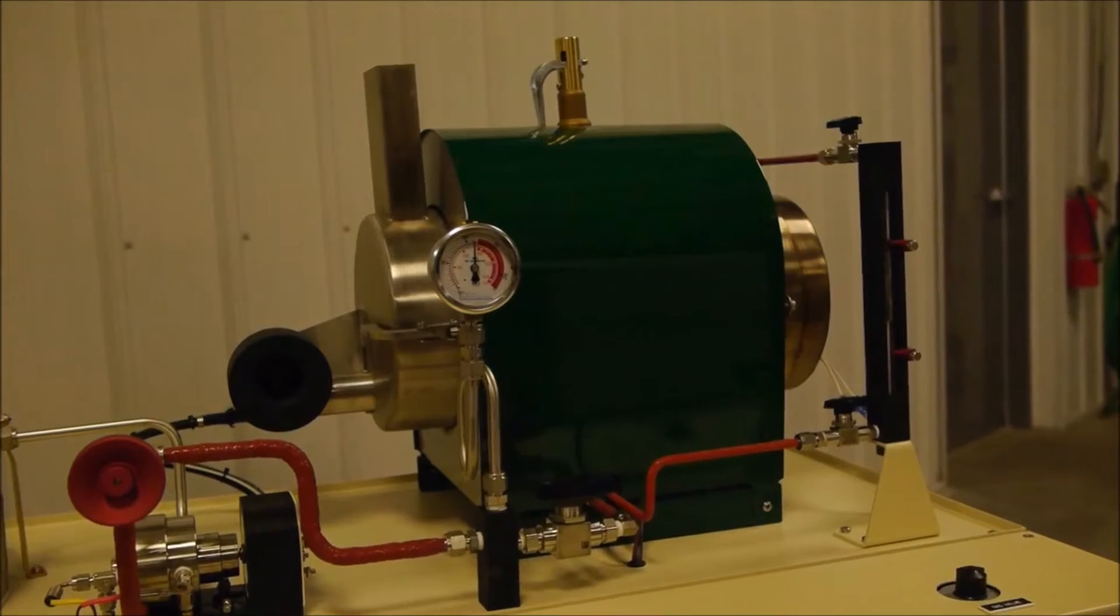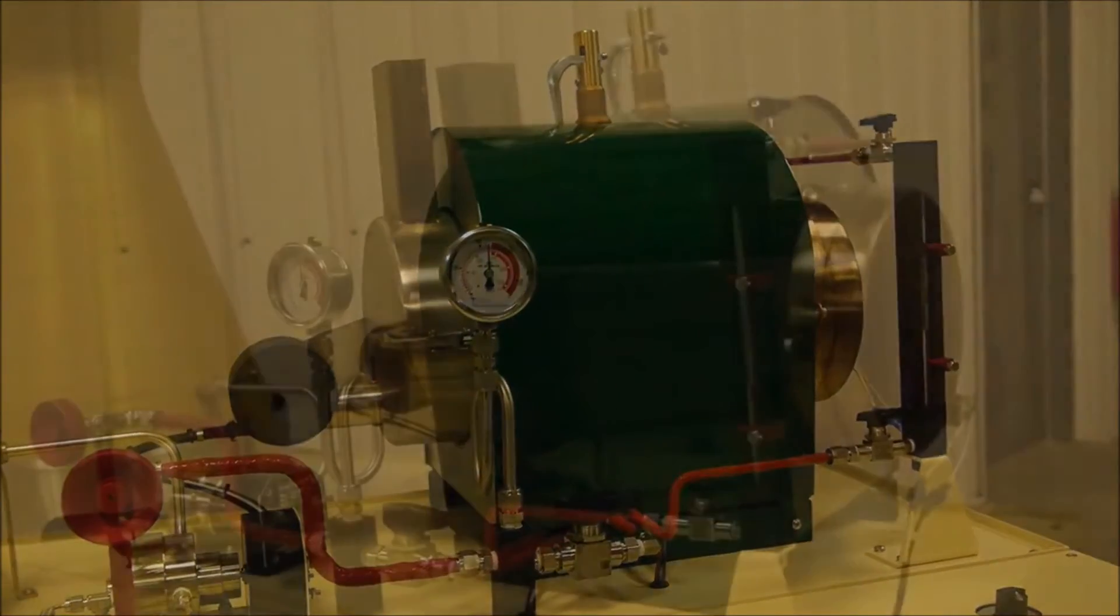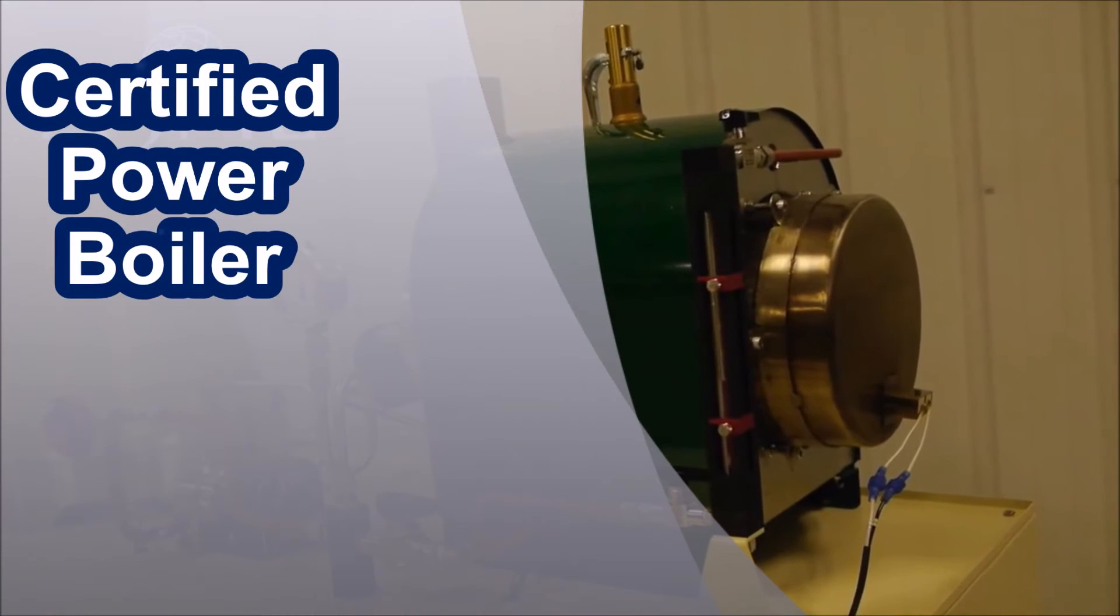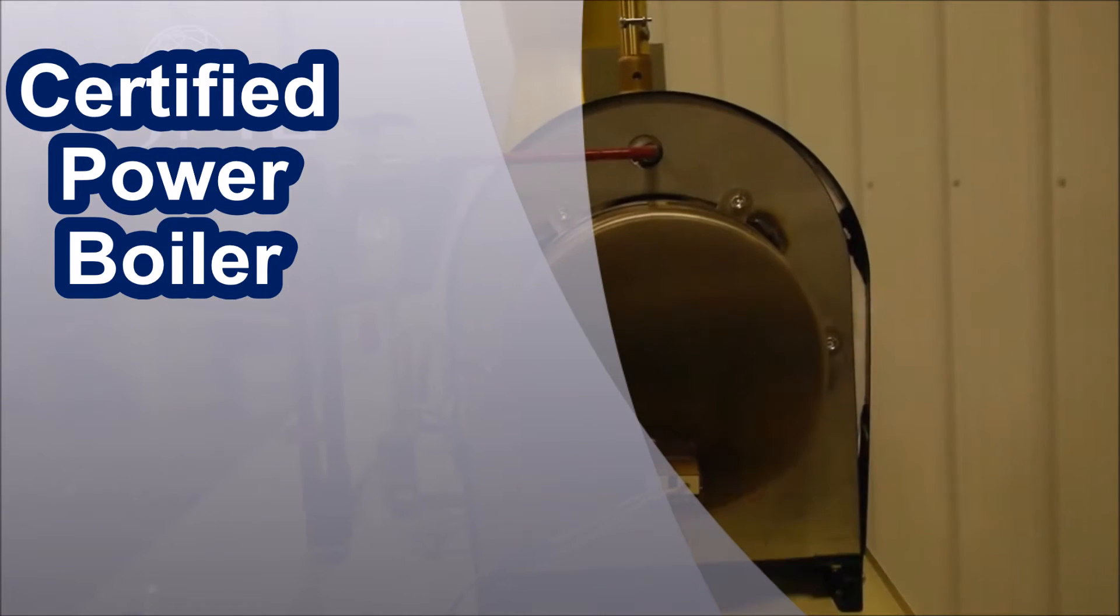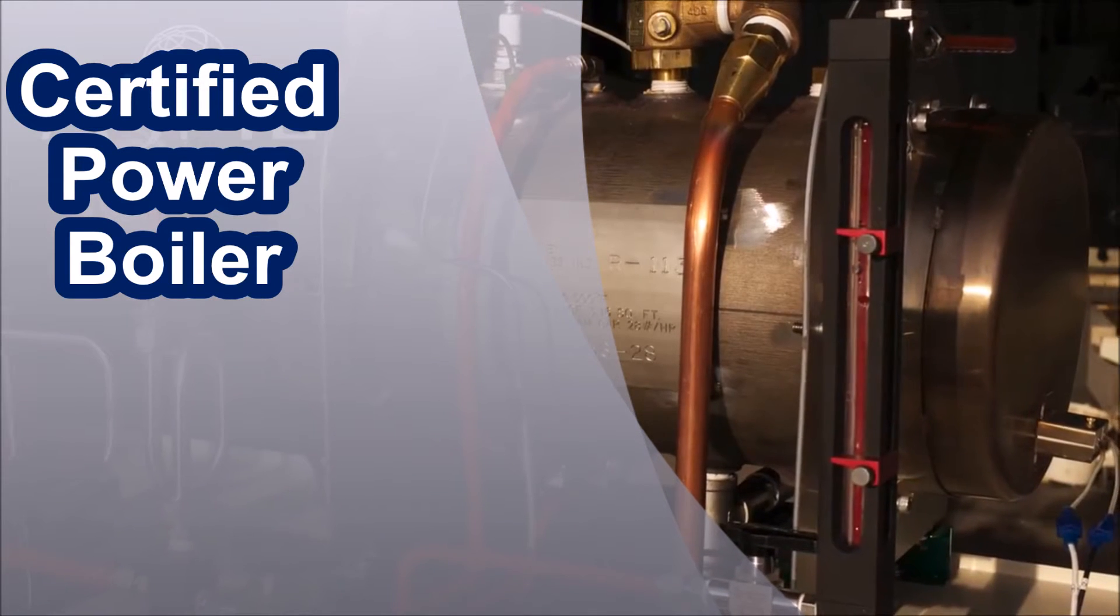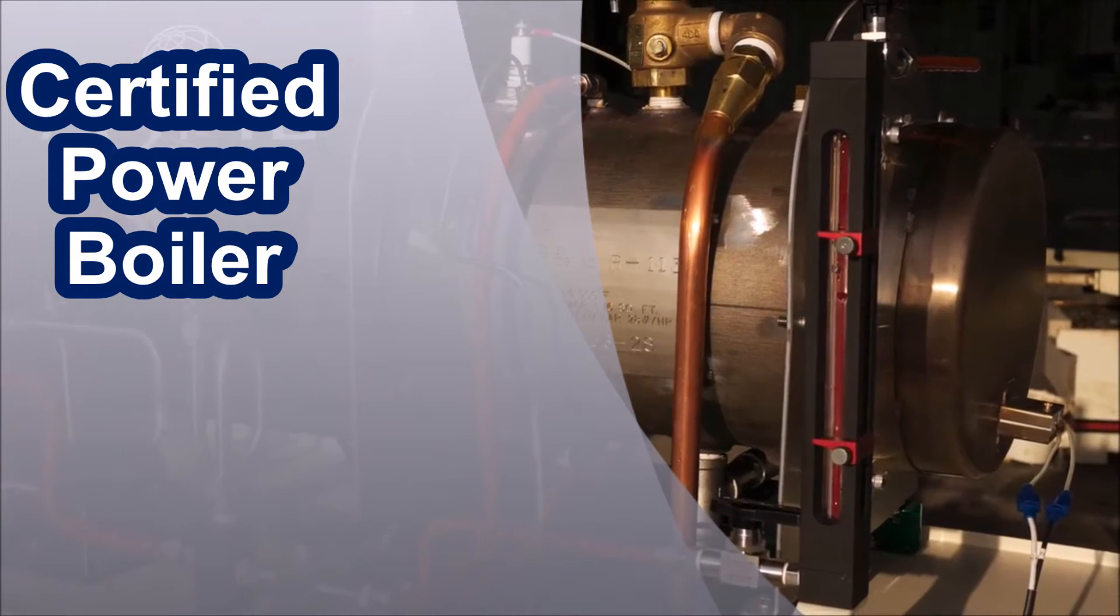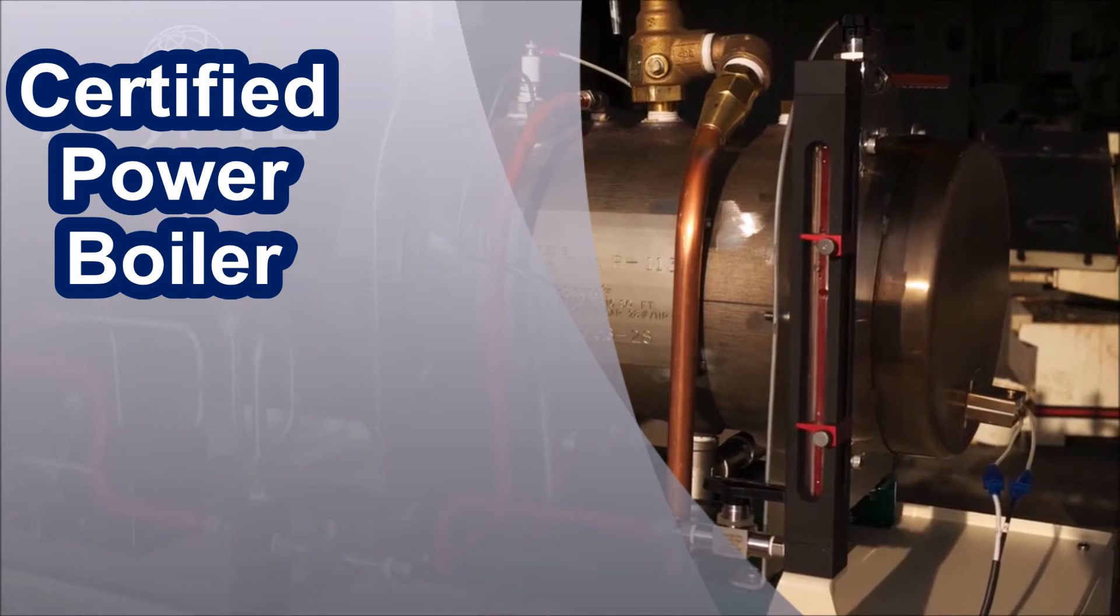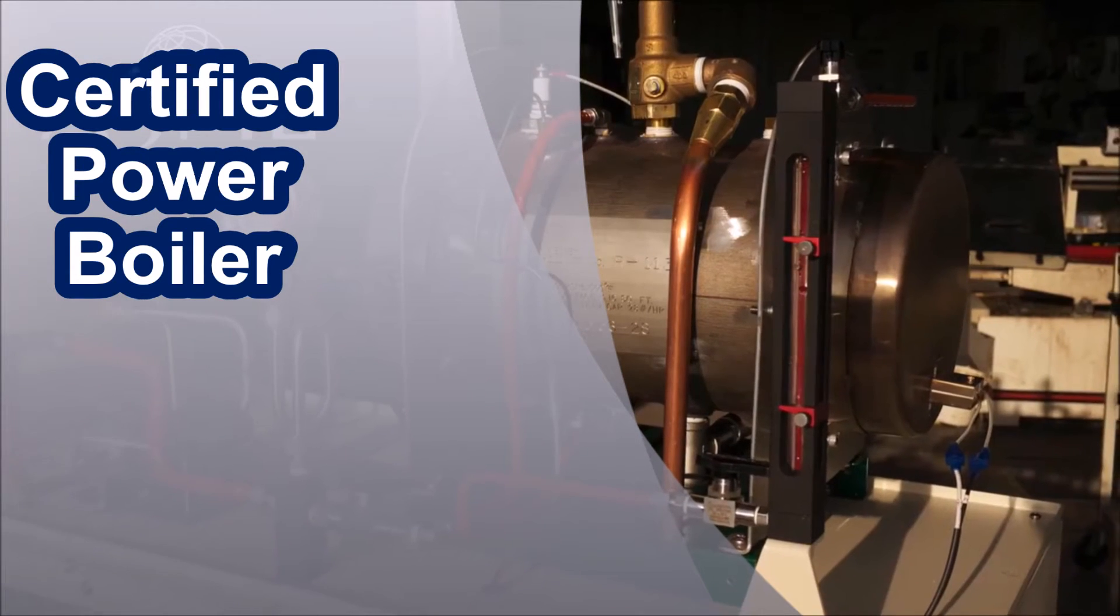The tube type boiler is certified as a Section 1 power boiler by the American Society of Mechanical Engineers and carries an S-Stamp designation. It is also registered as a Certified Power Boiler with the National Board of Boiler and Pressure Vessel Inspectors and carries an NB designation.